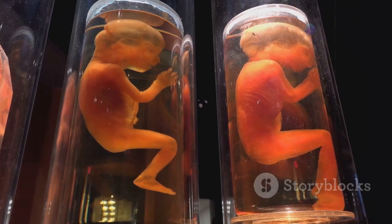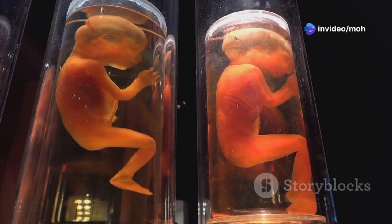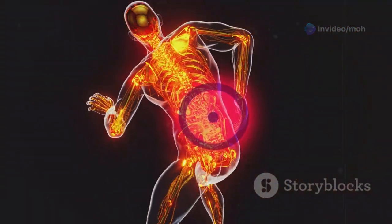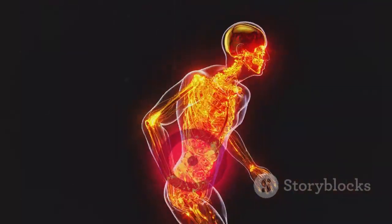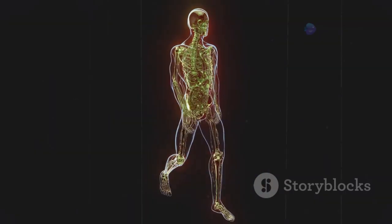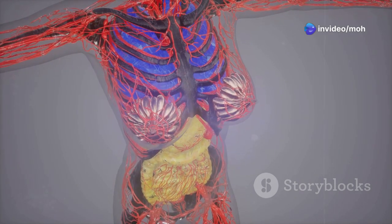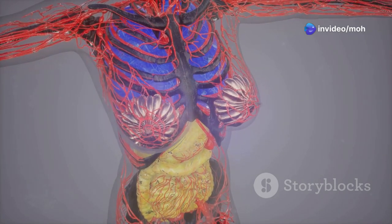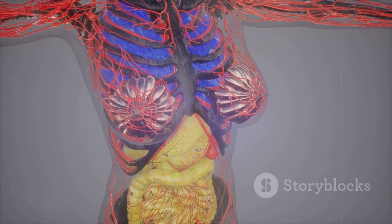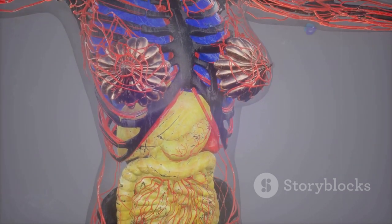The inner layer, intimately associated with the endoderm, is called the splanchnic mesoderm. This layer embarks on a different developmental path, giving rise to the smooth muscles and connective tissues that form the walls of our internal organs. It is the splanchnic mesoderm that sculpts the intricate architecture of our digestive system, our lungs, and our heart, creating the muscular frameworks that power their vital functions.